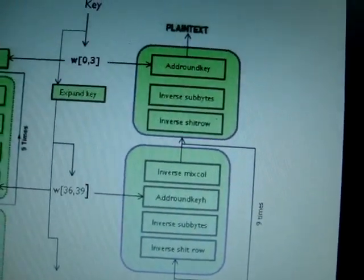Then the decryption block, if you see, the key value and the ciphertext will be given to an AddRoundKey. And here the SubBytes and ShiftRows are exchanged.